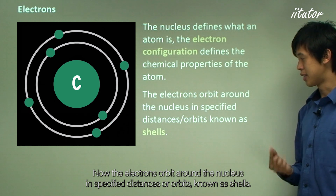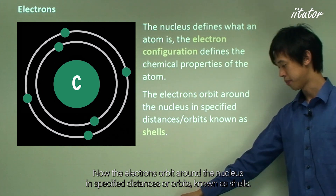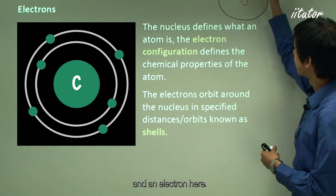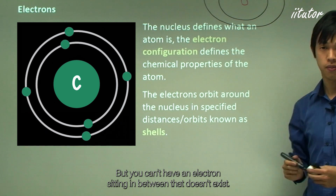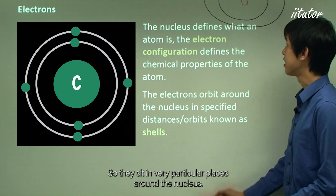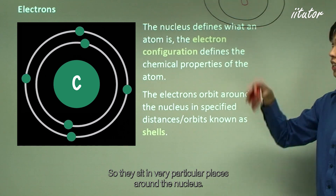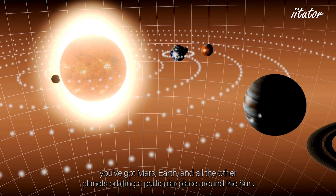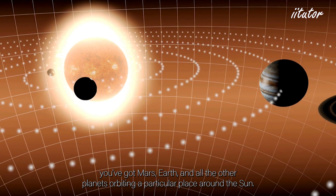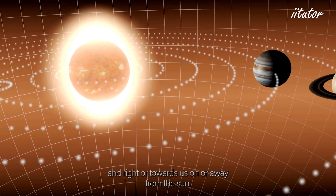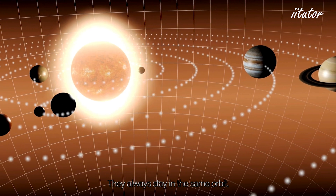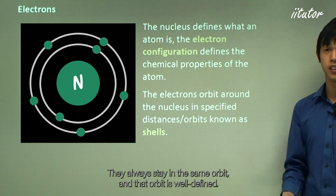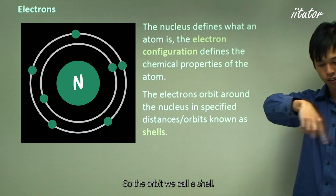Electrons orbit the nucleus in specified distances or orbits known as shells. An electron can sit at certain distances from the nucleus, but not in between — they sit in very particular places. This is similar to planets in the solar system, which always stay in the same orbit. We call that orbit a shell.